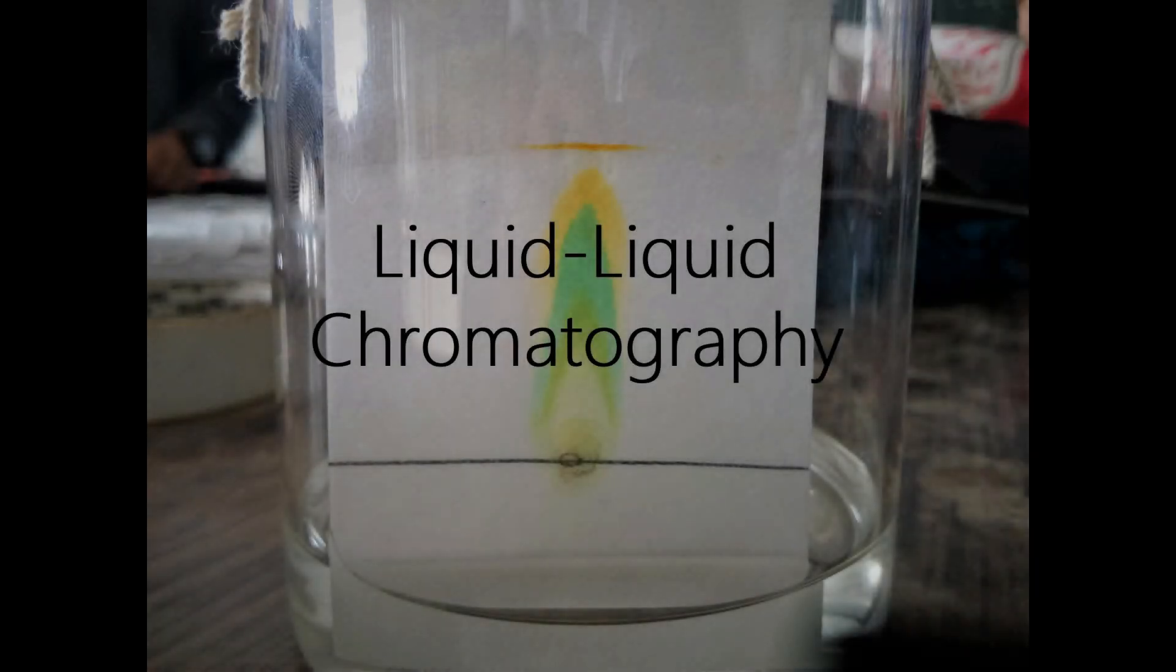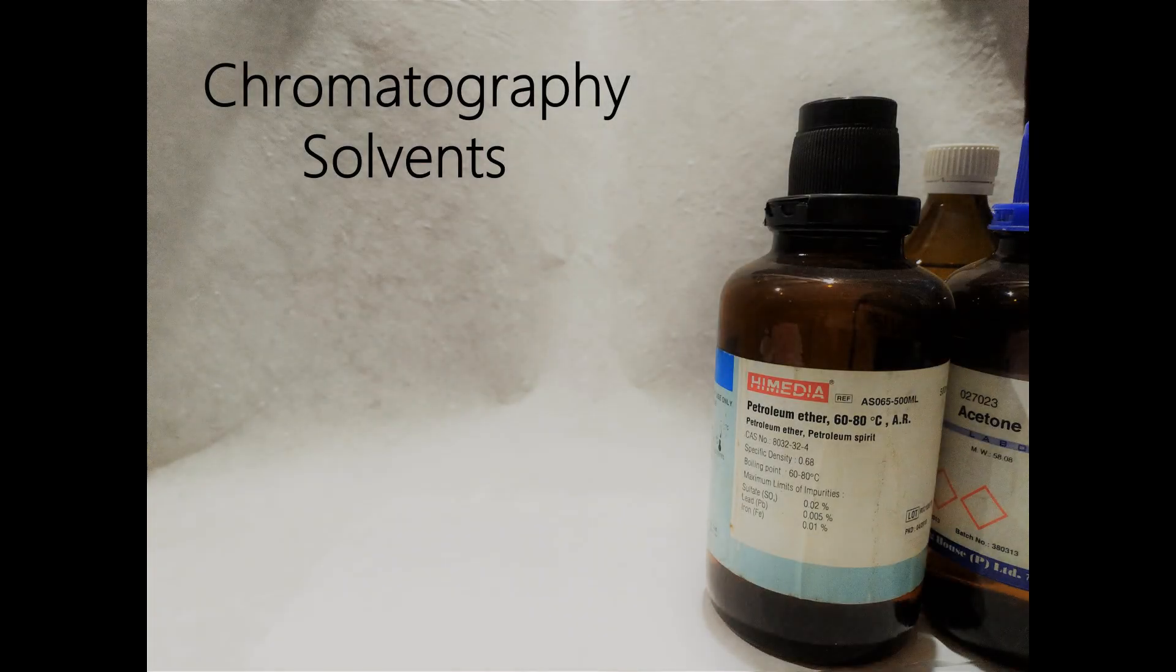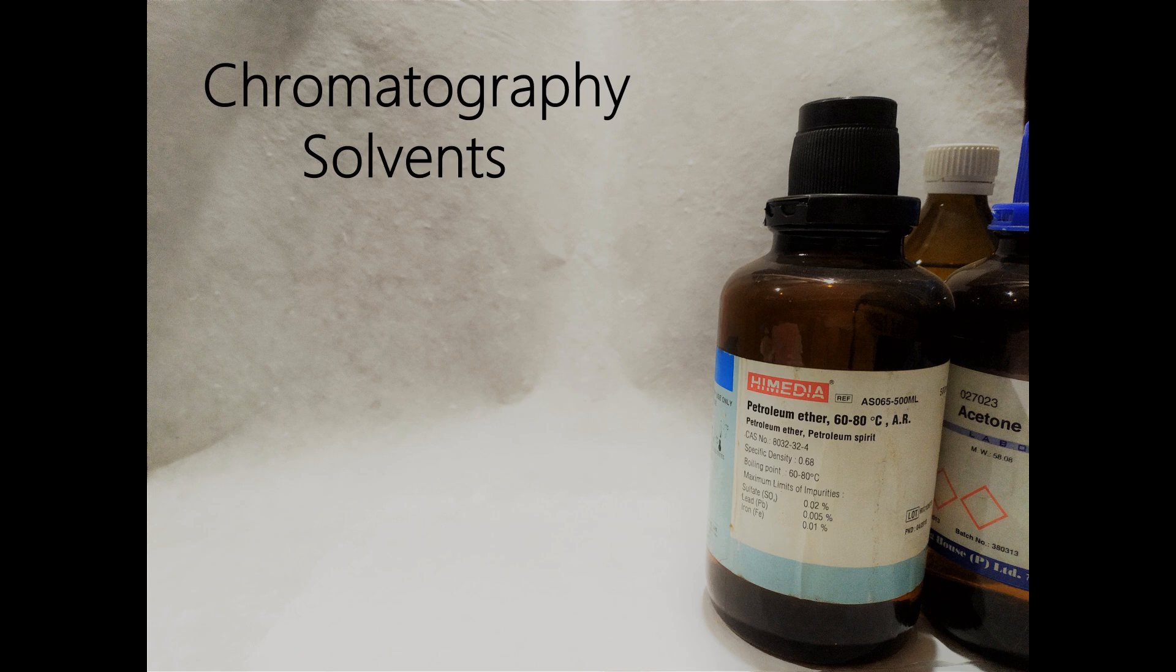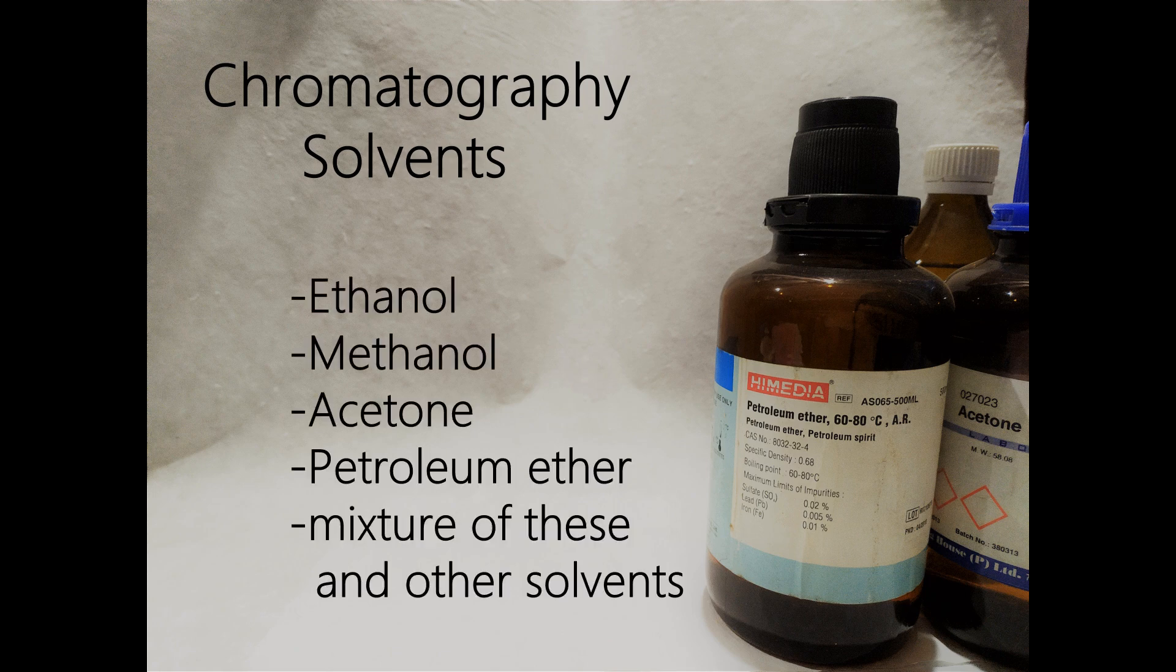Paper chromatography is therefore also referred to as liquid-liquid chromatography. The choice of solvents to be used in paper chromatography is varied and depends primarily on the substances to be separated. As far as plant pigment chromatography is concerned, one can use a variety of solvents including ethanol, methanol, isopropanol, acetone and petroleum ether.